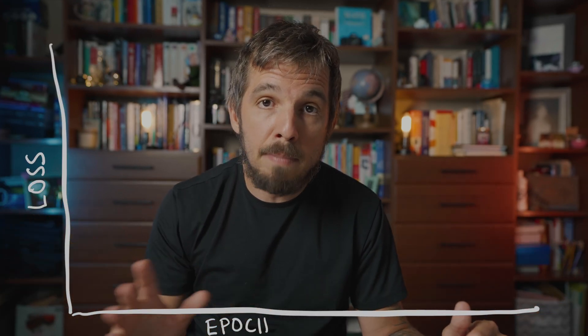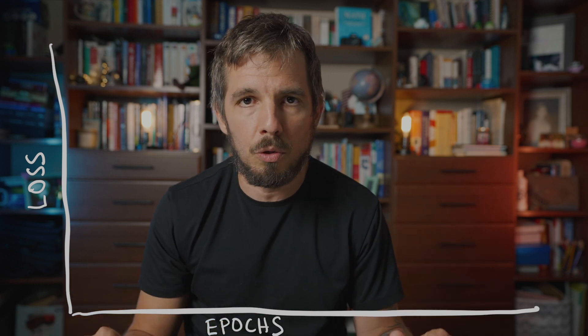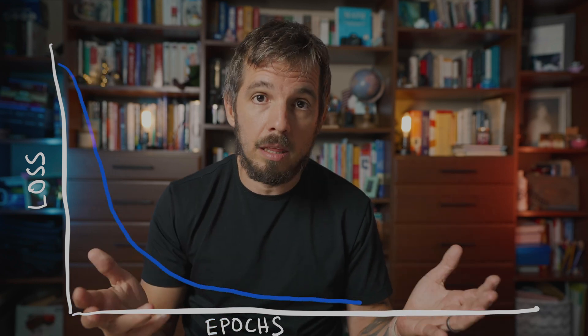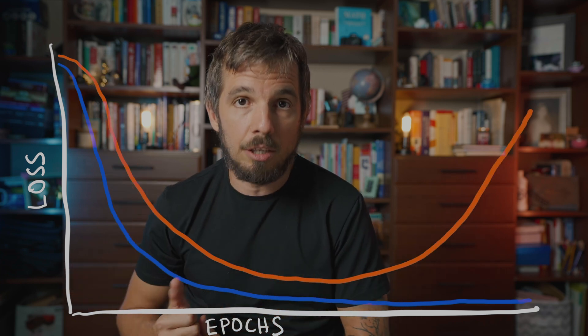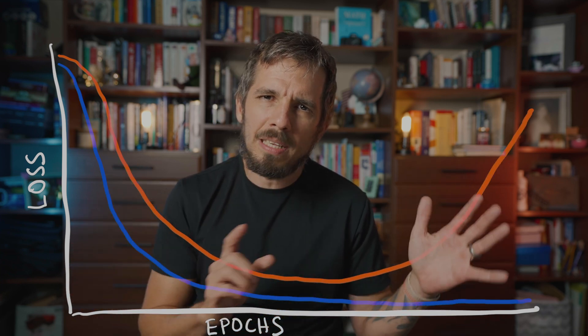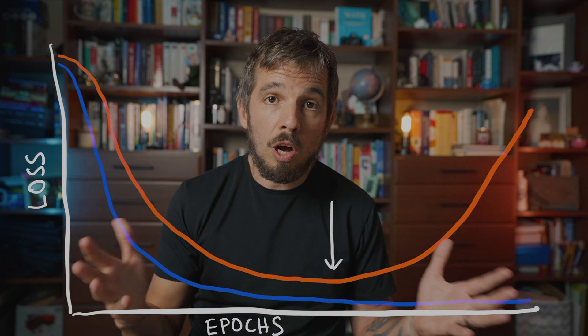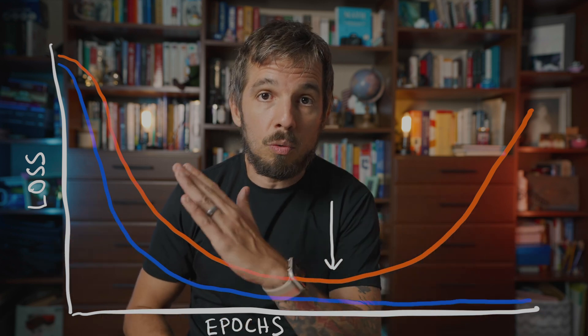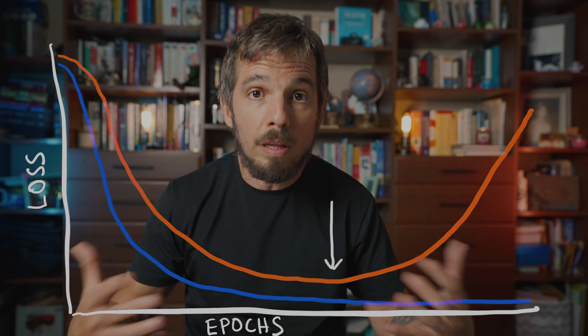Now look at the chart on the screen. Assume that we pick the validation loss as the metric to measure how the model is doing. The blue line is the training loss, while the orange line is the validation loss. Notice what happens around this area here — suddenly the validation loss starts increasing, indicating that our model is getting worse. If you train for too long, that's exactly what you'll see. And that's the point where we want to push the brakes and halt the training process.